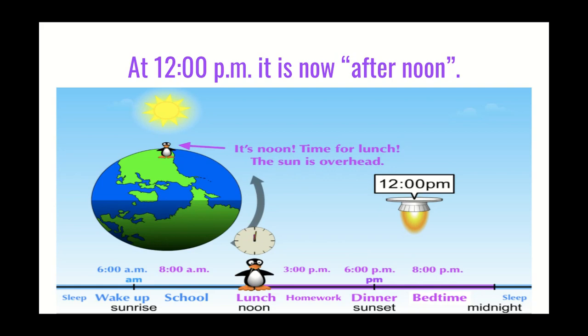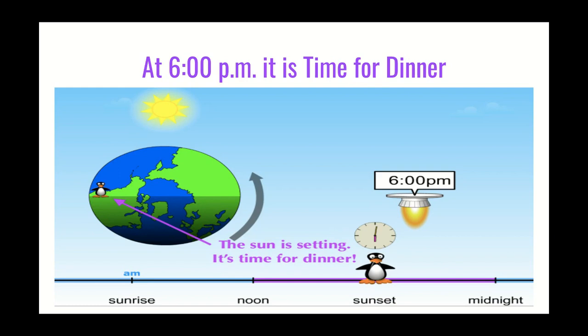Now, fast forward. We leave school at 3 o'clock, you do your homework, and now it's 6 p.m. Do you see how it's starting to get dark? The sun is getting ready to go down again. The sun is setting and it's time for dinner. You can see Gigi on our timeline now moving to the right — she's in the purple part and it's 6 p.m.